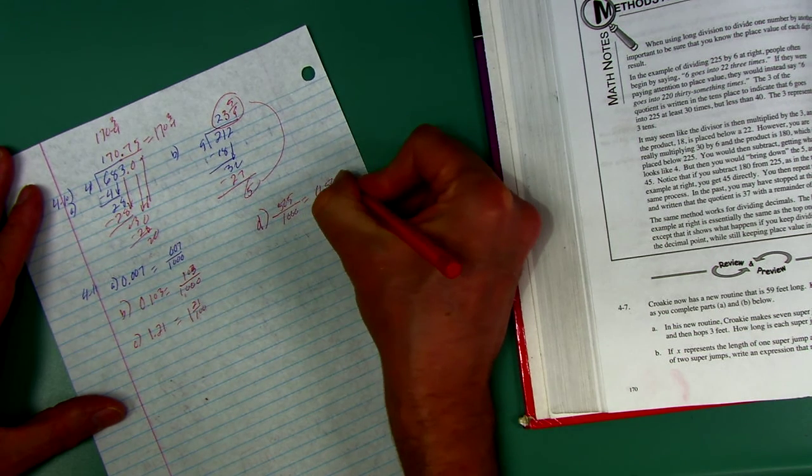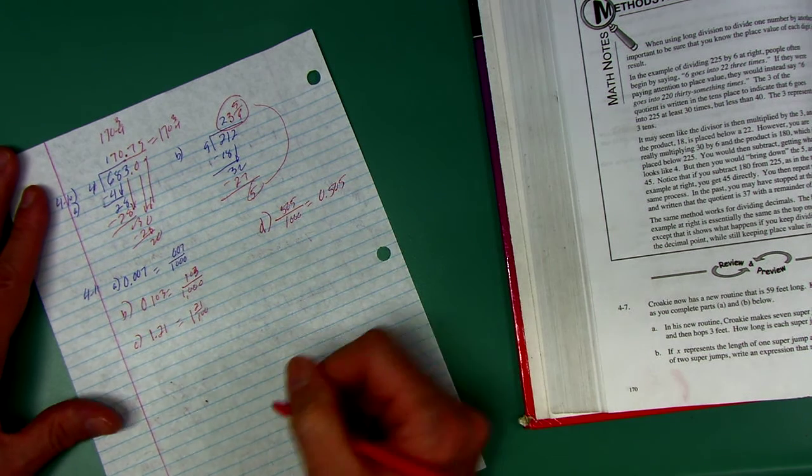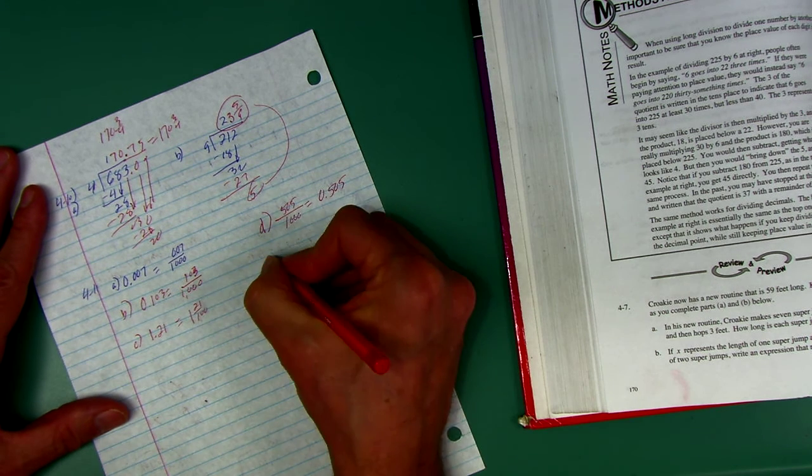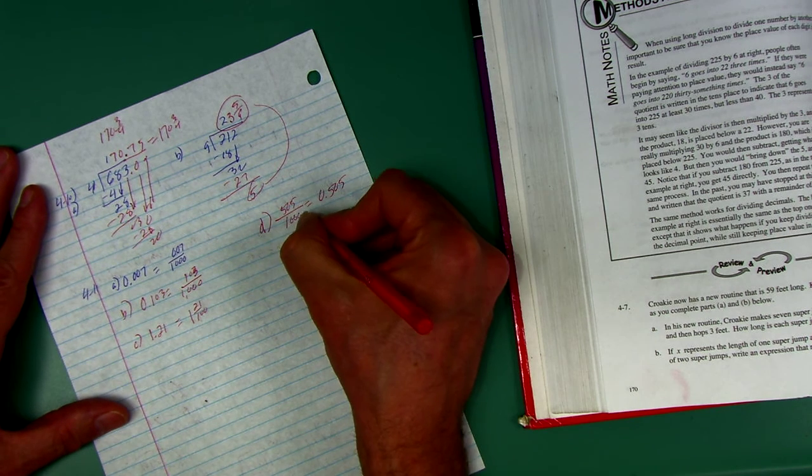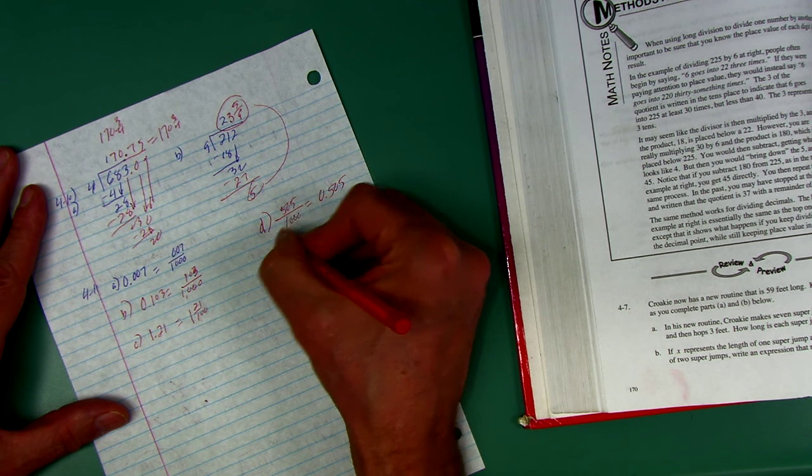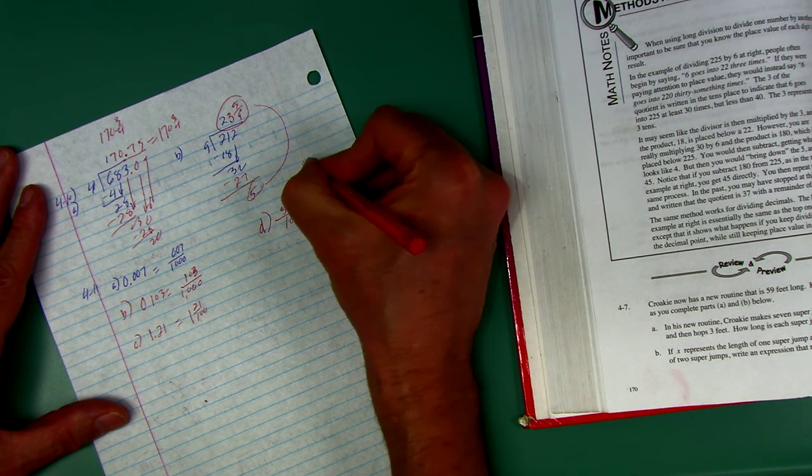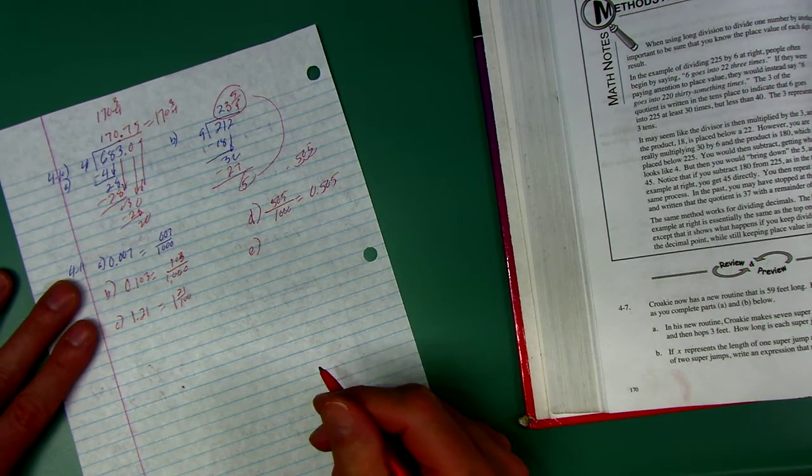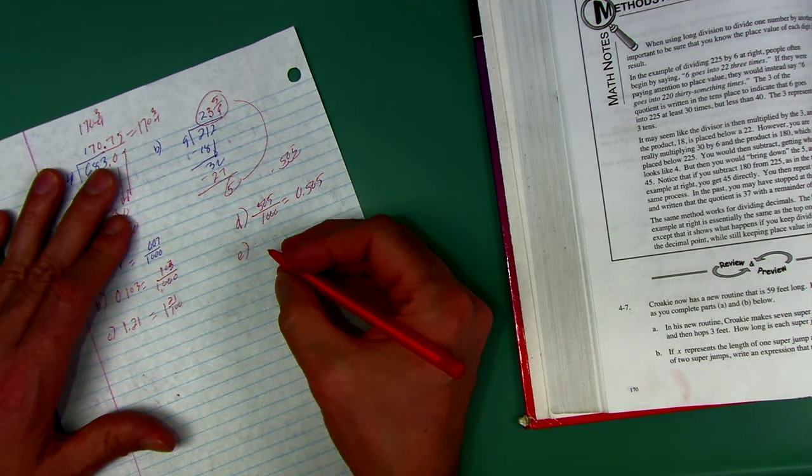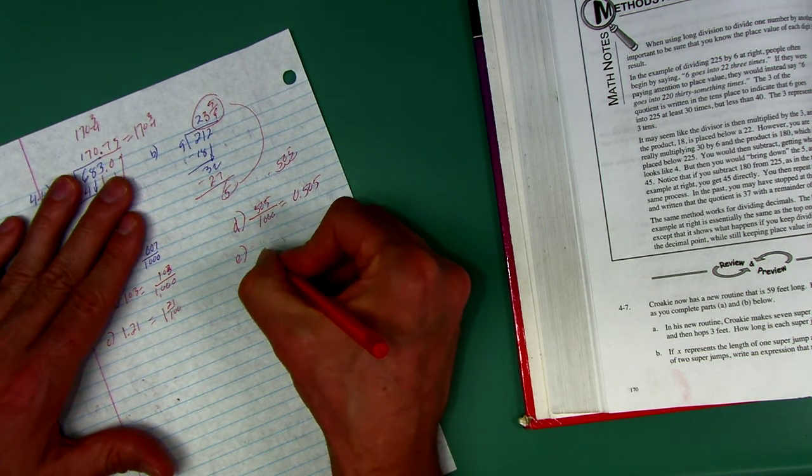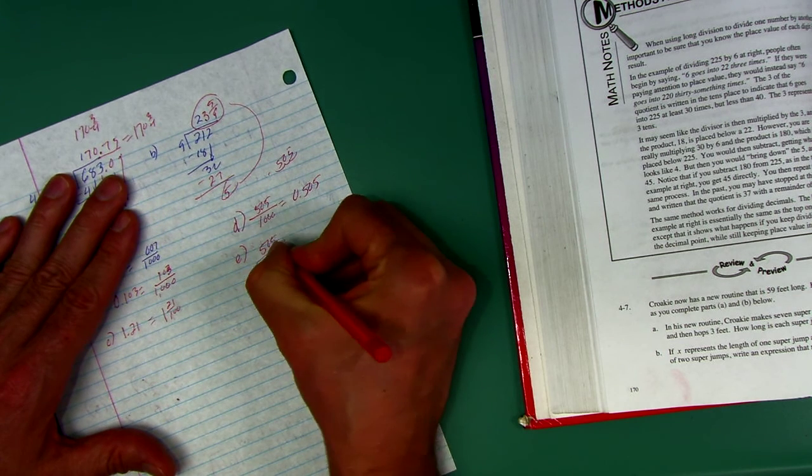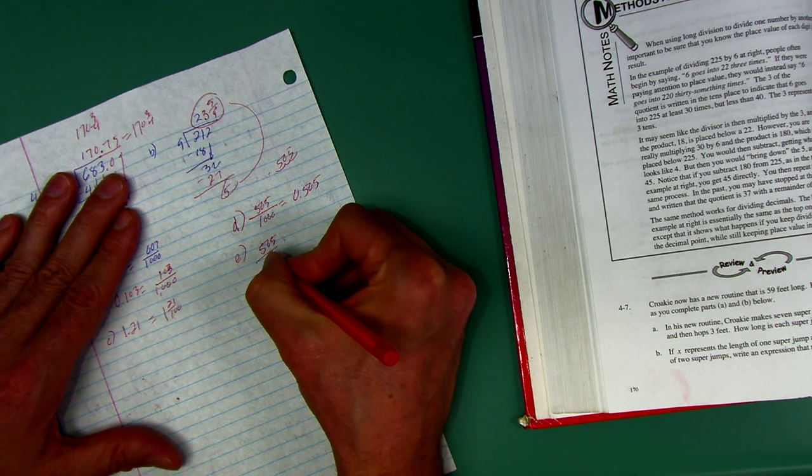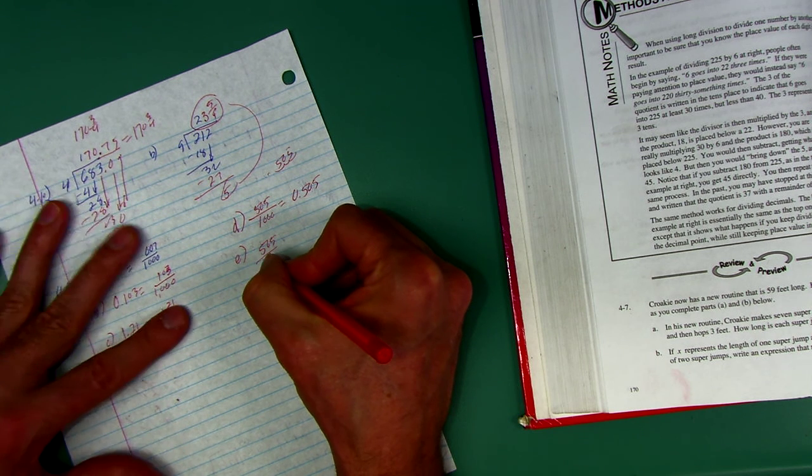D, 505 thousandths. I'm not going to simplify that, because my job is to write this as a decimal. 505 thousandths is 505 thousandths. I could divide the bottom into the top, but when you divide by 1,000, you just move the decimal three spots. So 505, boom, boom, boom, three spots. On E, 500 and 5 hundredths, that's going to be 5 and 5 hundredths, but let's go ahead and divide the bottom into the top.